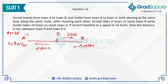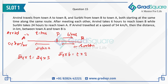Let T be the number of hours Arvind traveled before reaching meeting point P. The distance traveled by Arvind in T hours equals the distance traveled by Surabhi from P to A, which is T multiplied by Surabhi's speed S. Similarly, Arvind travels from P to B at 54 km/h in 6 hours, and this distance equals the distance Surabhi covered from point B to P, which is T multiplied by S.